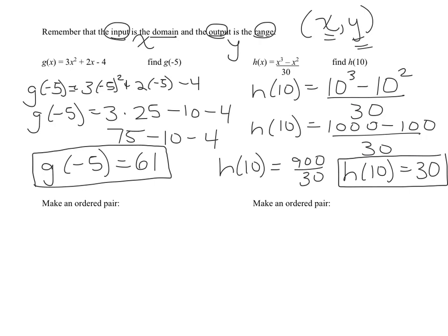So the answer to this one is g of negative 5 equals 61. Well I put in negative 5, I got out 61. So technically, x is negative 5, y is 61. So the ordered pair would look like this: negative 5, 61. Ordered pairs are always in parentheses and always separated by a comma, and it always goes x and then y. So the next one, I put in 10, I got out 30, so the ordered pair would be 10, 30.